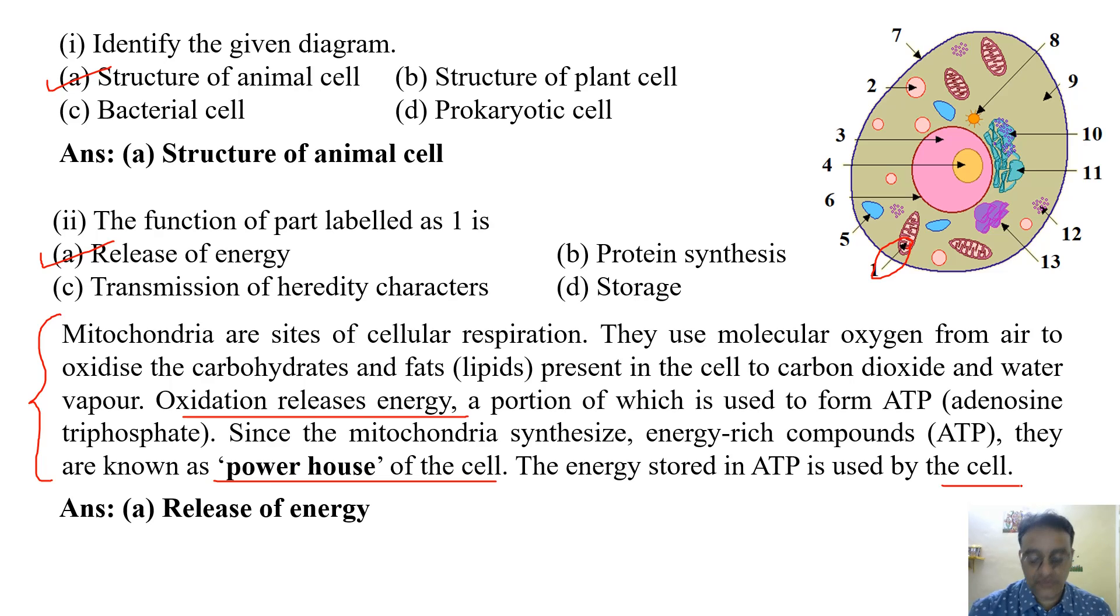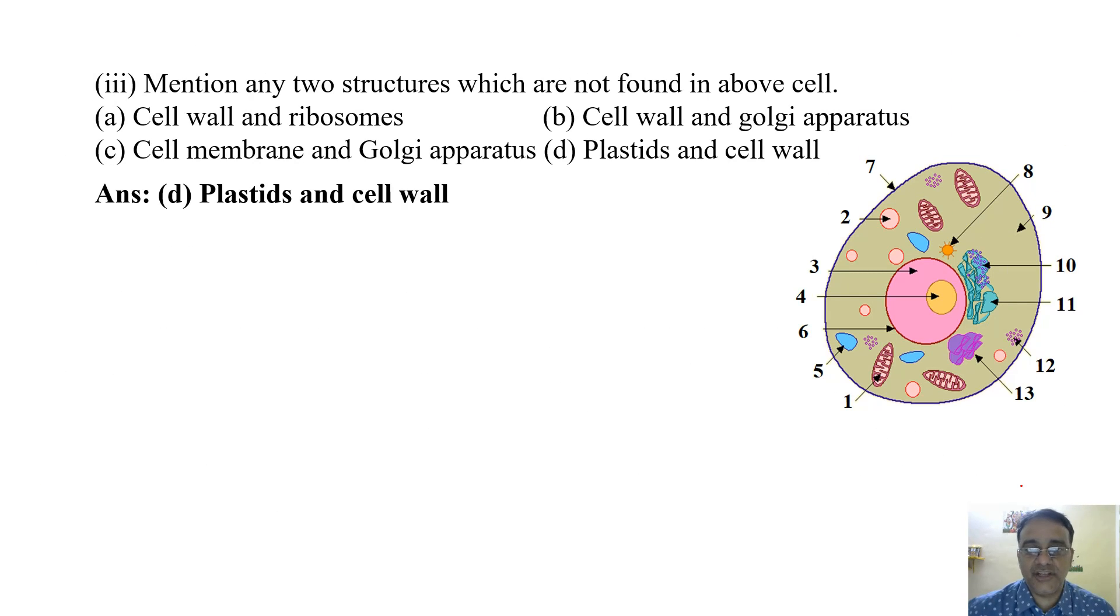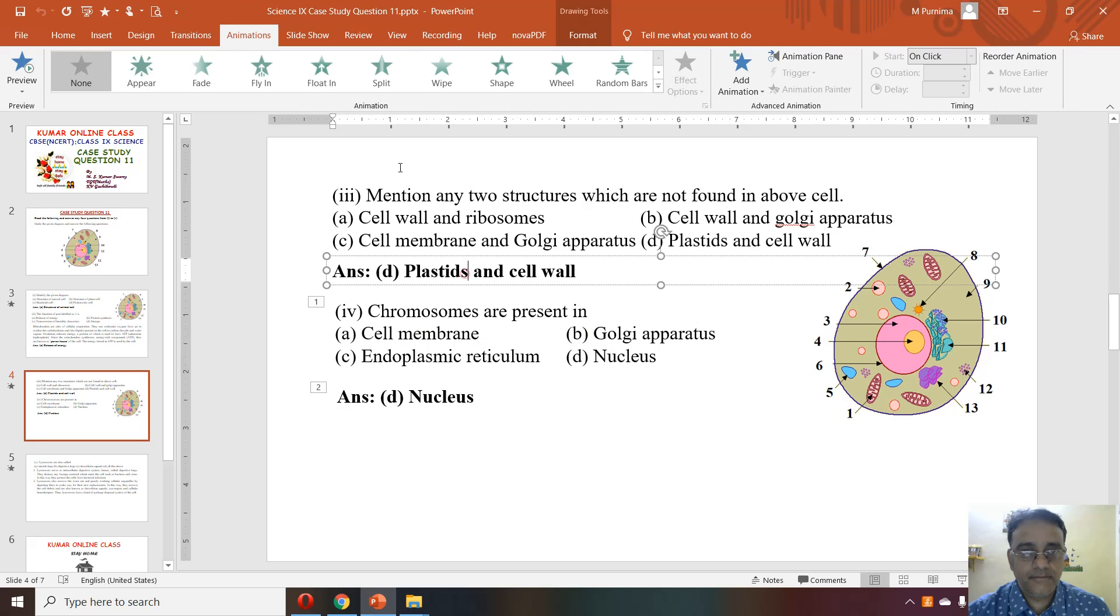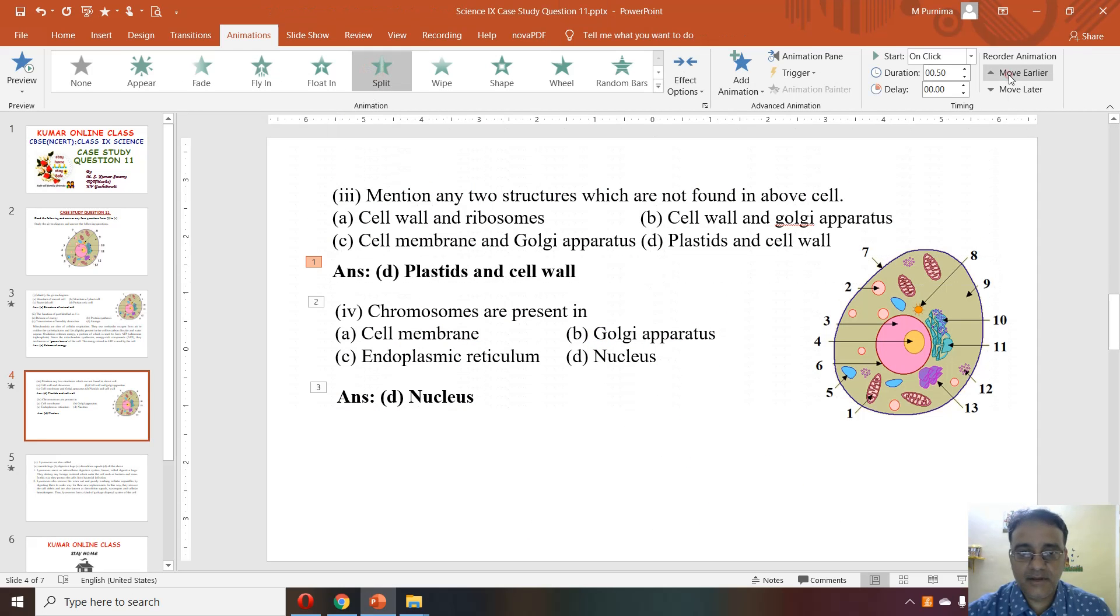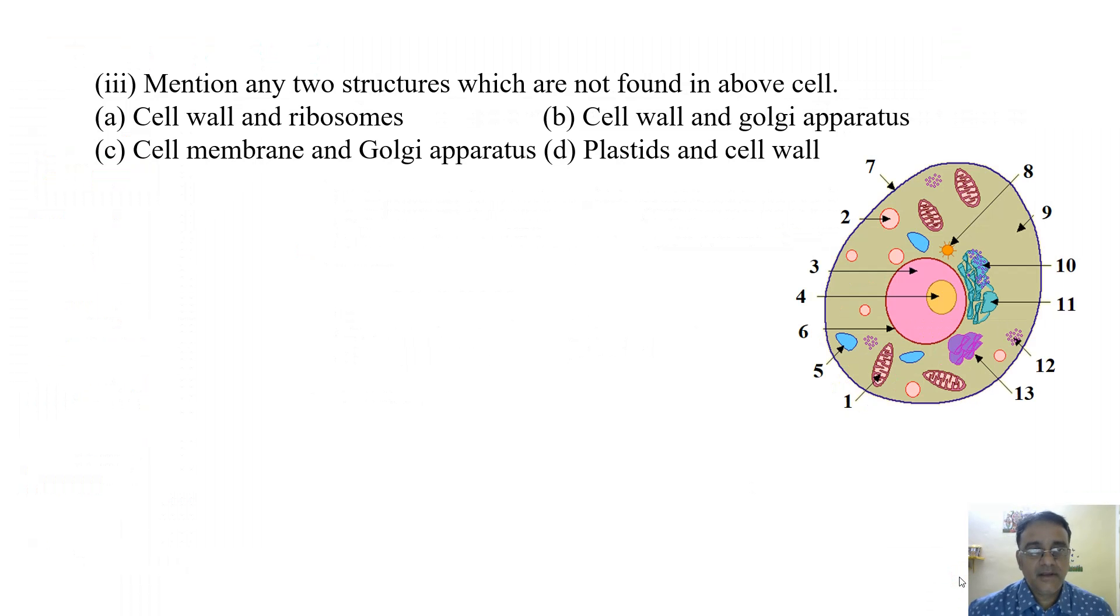Now we'll move toward the next question, the third question. Mention any two structures which are not found in animal cells. Options: cell wall and ribosomes, cell wall and Golgi apparatus, cell membrane and Golgi apparatus, or plastids and cell wall. Plastids are found only in plant cells. So the correct option is (d).